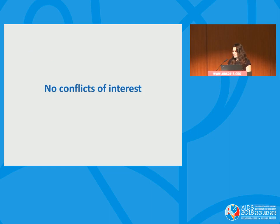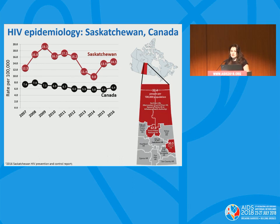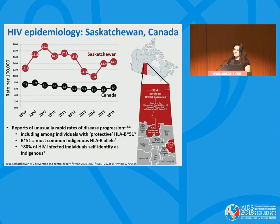Thanks for the introduction. Since 2003, a concentrated HIV epidemic has been unfolding in the Canadian province of Saskatchewan — a prairie province in central Canada. As of 2016, there are 14.5 new HIV diagnoses per 100,000 people, more than twice the national average in Canada, with some health regions at rates upward of 10 times the national average, among the highest in North America.